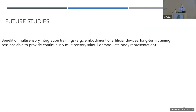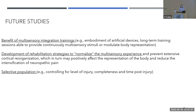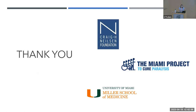For future directions, I believe there is a benefit of multi-sensory integration training — for example, creating trainings that involve the embodiment of artificial devices and long-term training sessions that continuously provide multi-sensory stimulation to modulate body representation. This could be useful to develop rehabilitation strategies to normalize the multi-sensory experience, prevent extensive cortical reorganization, and in turn reduce the intensification of neuropathic pain. It is also important to have selective populations, as these studies require large sample sizes to control for level of injury, completeness, and time post-injury.